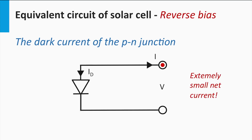If we put the P-N junction in the dark and apply a reverse bias, the P-N junction generates an extremely small current in the block direction of the diode. The current direction in electrical circuits generally points in the direction in which positive charges flow, meaning that electrons, which are negatively charged, flow in the opposite direction. Under reverse bias, this small current in the block direction can be represented by electrons moving in the direction of the triangle.